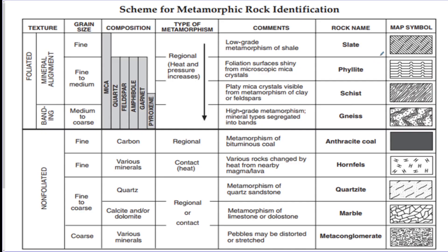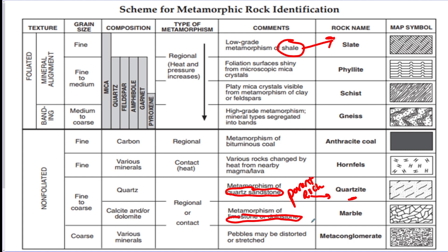Here is the chart for metamorphic rocks. One thing to point out is that it shows the parent rock — the original rock that a metamorphic rock comes from. For example, quartzite comes from sandstone, shale turns into slate, limestone or dolostone can turn into marble, and bituminous coal, which is a sedimentary rock, can turn into anthracite coal.